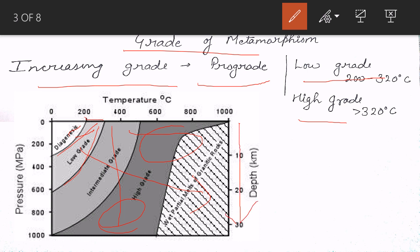You can see in the P-T diagram that pressure increases with depth and temperature increases along the other axis. At the boundary where conditions are extreme, the rock melts and converts into molten magma. Metamorphism only exists up to that melting boundary. This whole region before melting is the domain of metamorphism, and as we move toward higher P-T conditions the grade of metamorphism increases.